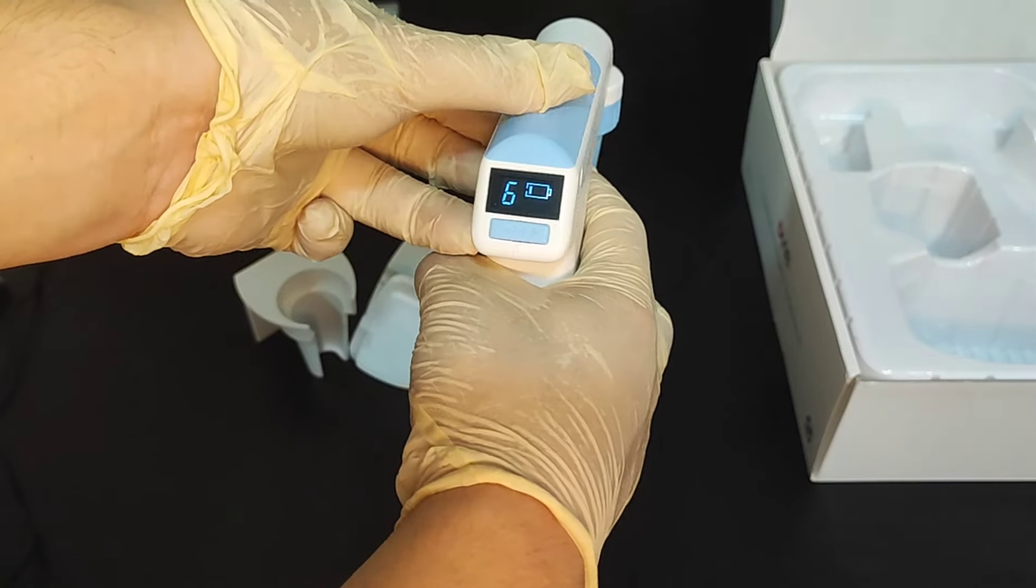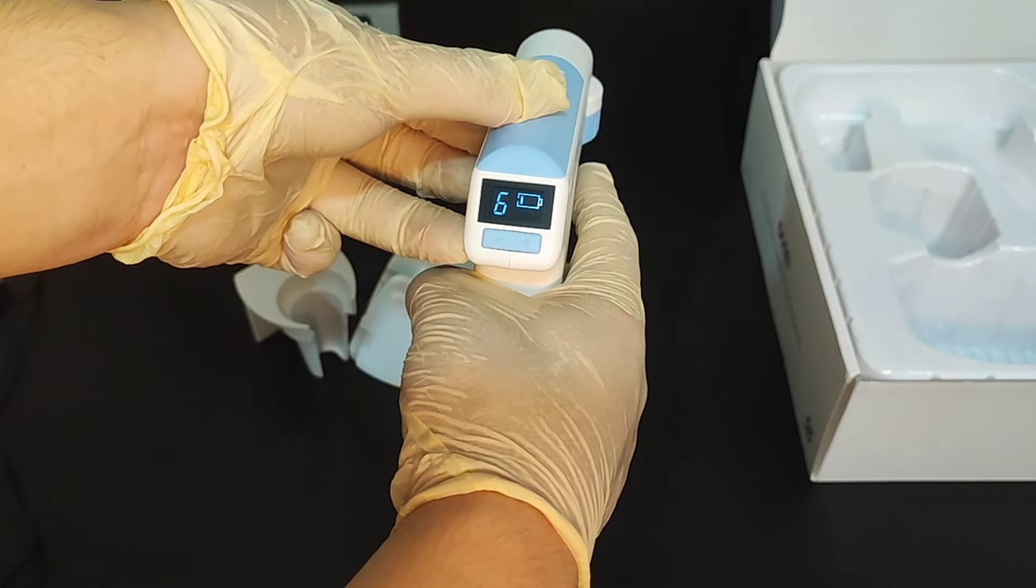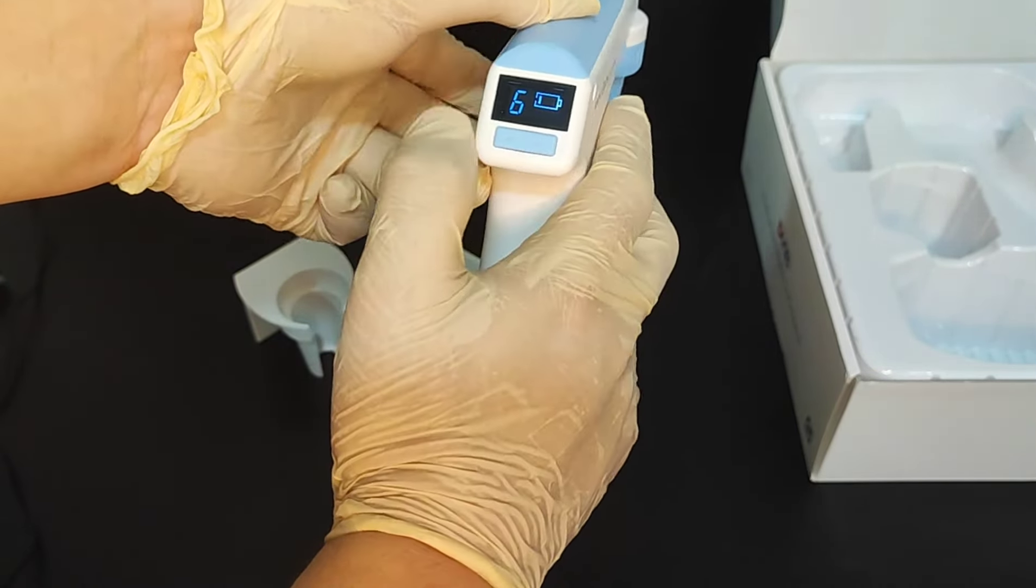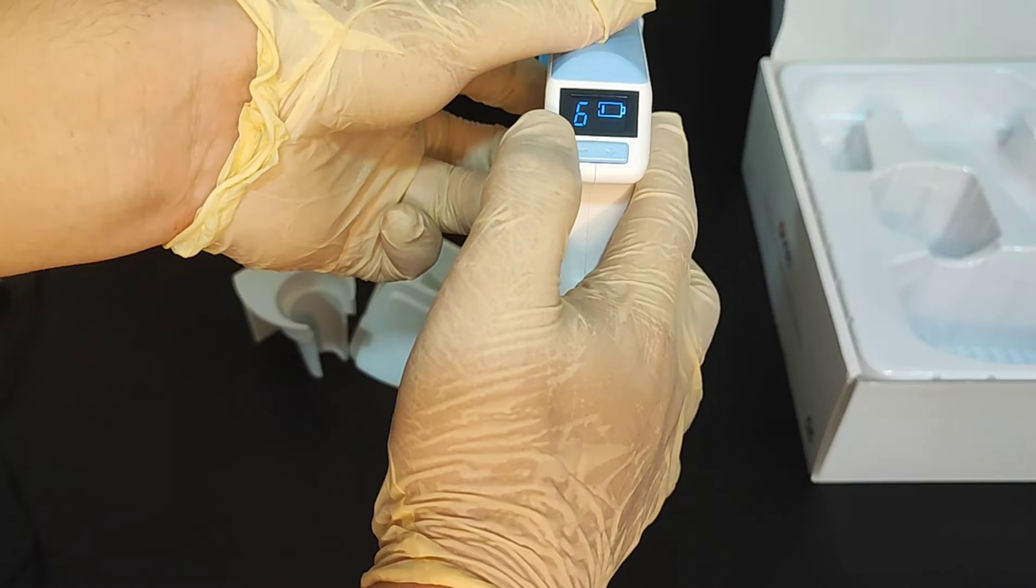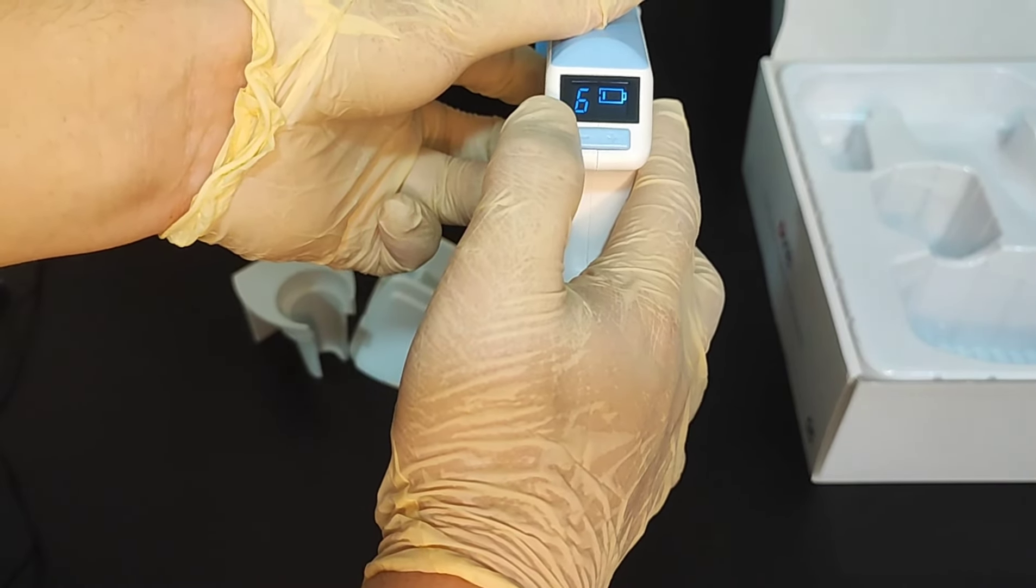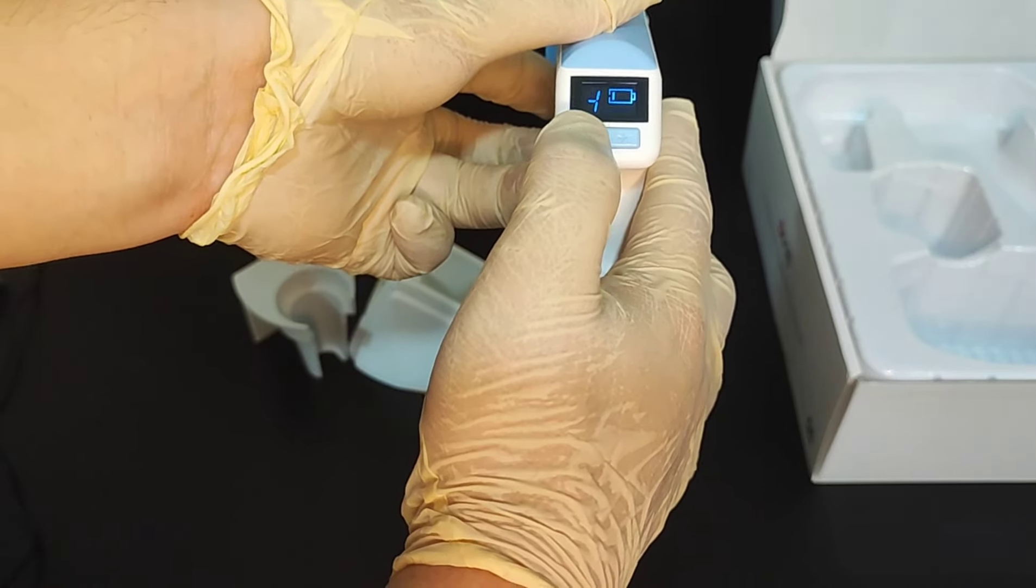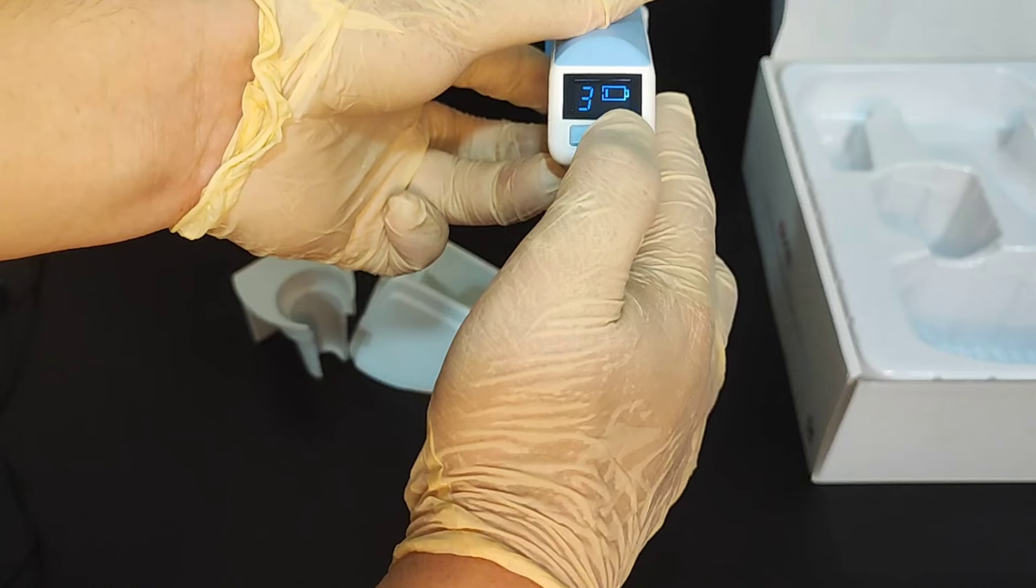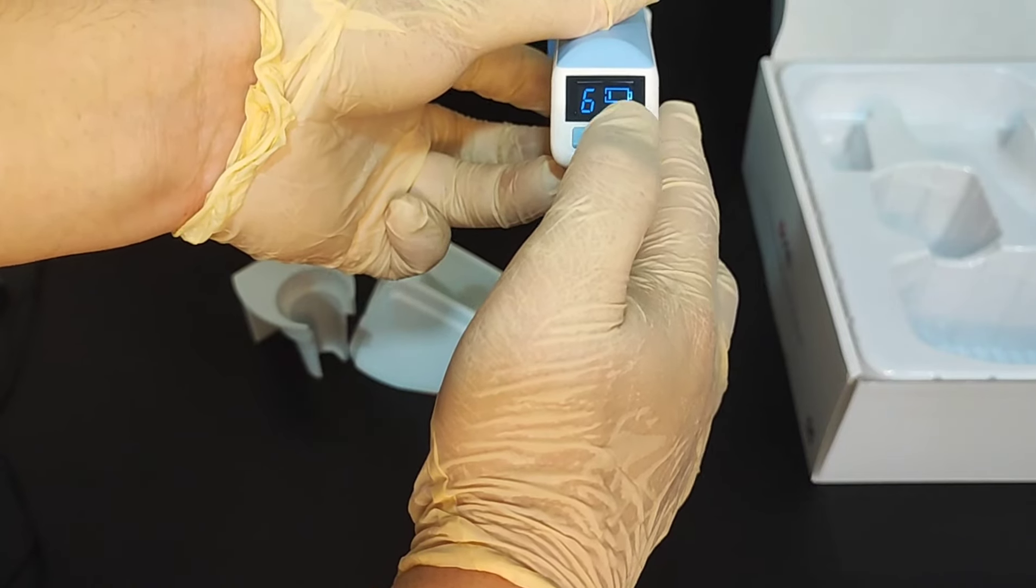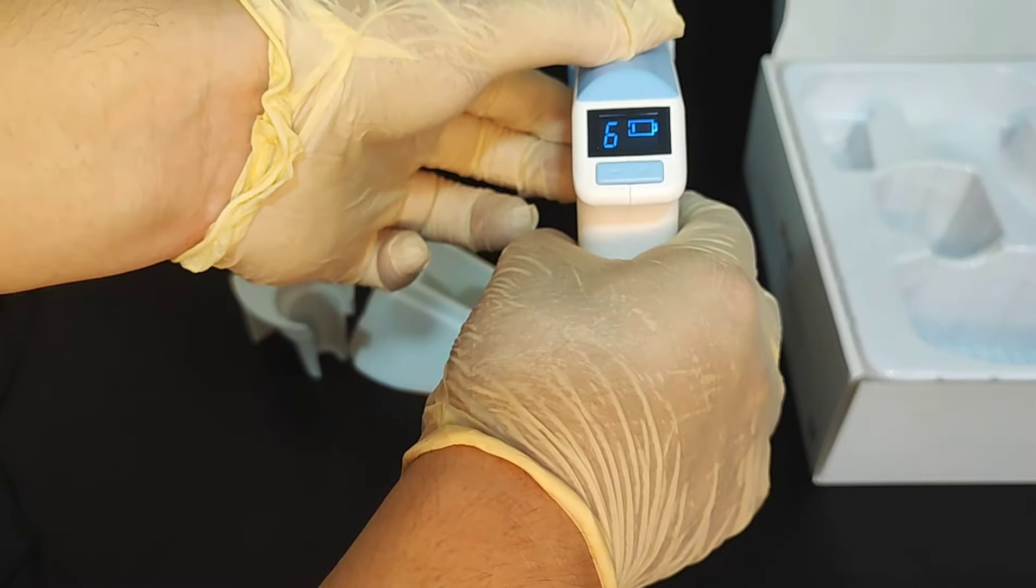When we push the suction trigger, the machine will automatically turn on. This is speed six. Speed six is the highest speed. We can reduce it. Five. Four. Three. Two. One. And we increase. So this is how we adjust the pipetting speed.